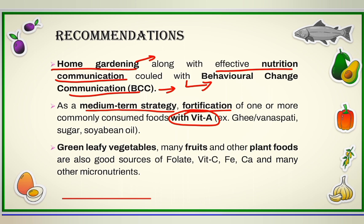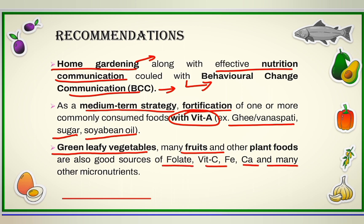As a medium-term strategy, fortification of commonly consumed foods with vitamin A can be promoted. The most common foods that can be fortified include ghee, vanaspati, sugar, and soybean oil — already fortified by various countries. The community should also be motivated to consume green leafy vegetables and fruits, which are rich sources of vitamin A as well as folate, vitamin C, iron, calcium, and many other micronutrients.